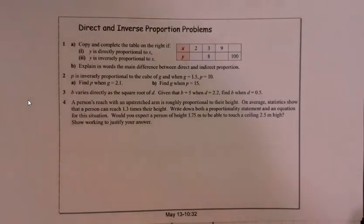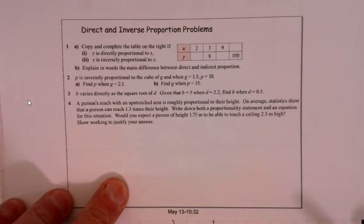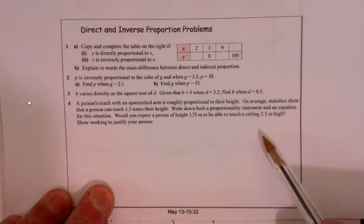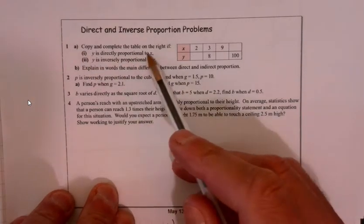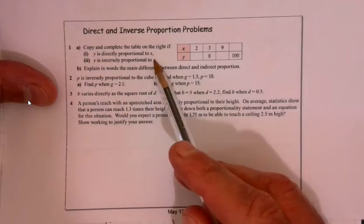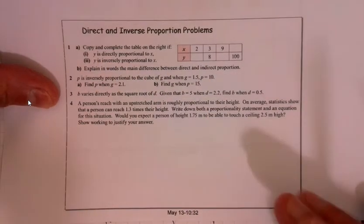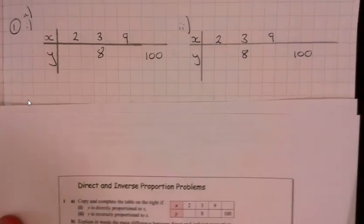Let's have a look at these questions. Remember the idea again? Have a go at the questions and then you can look through this to find the solutions. On the first question it says copy and complete the table on the right. So first of all y is directly proportional to x and then it's changed the rule. So basically that's two questions. I've copied the table out twice.